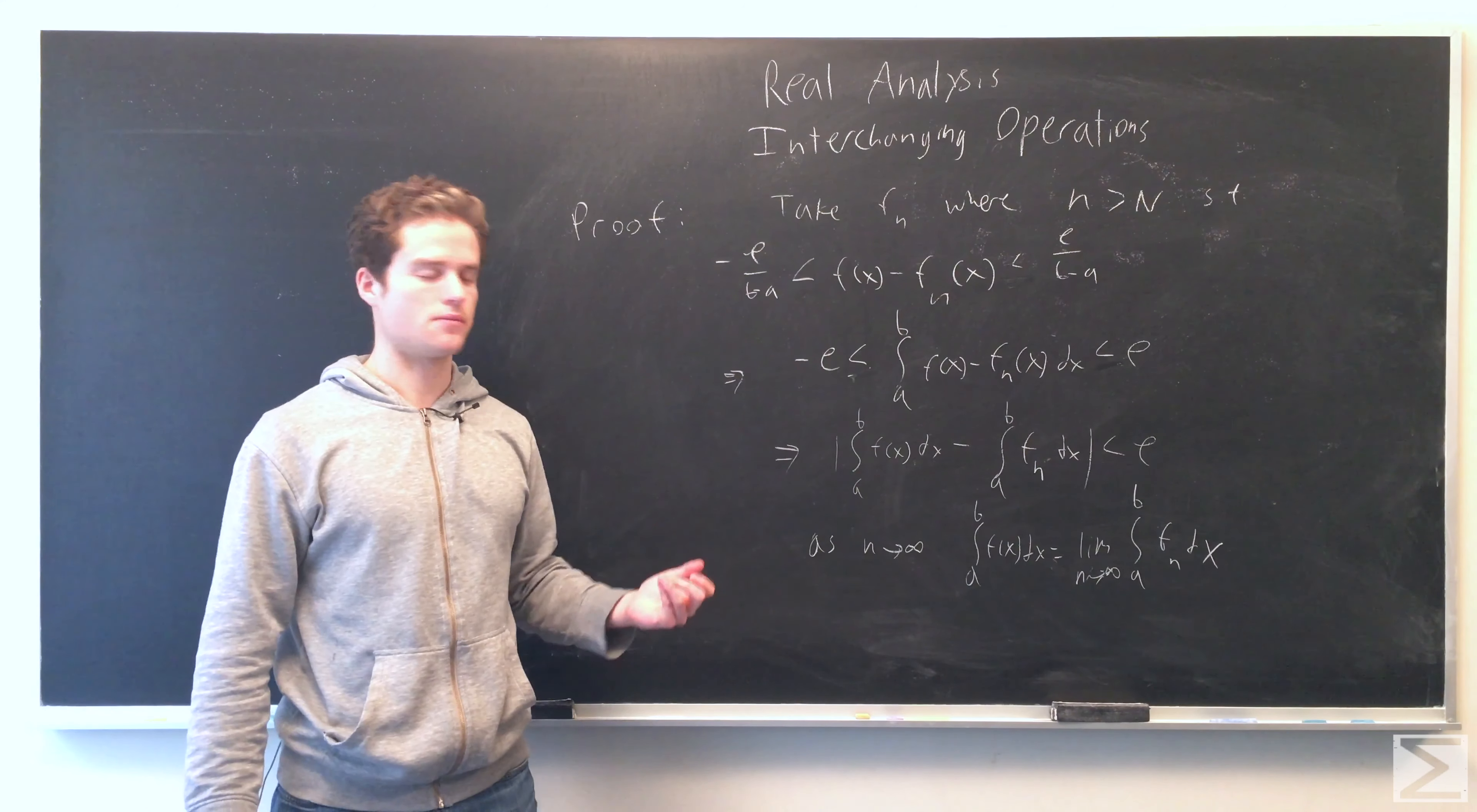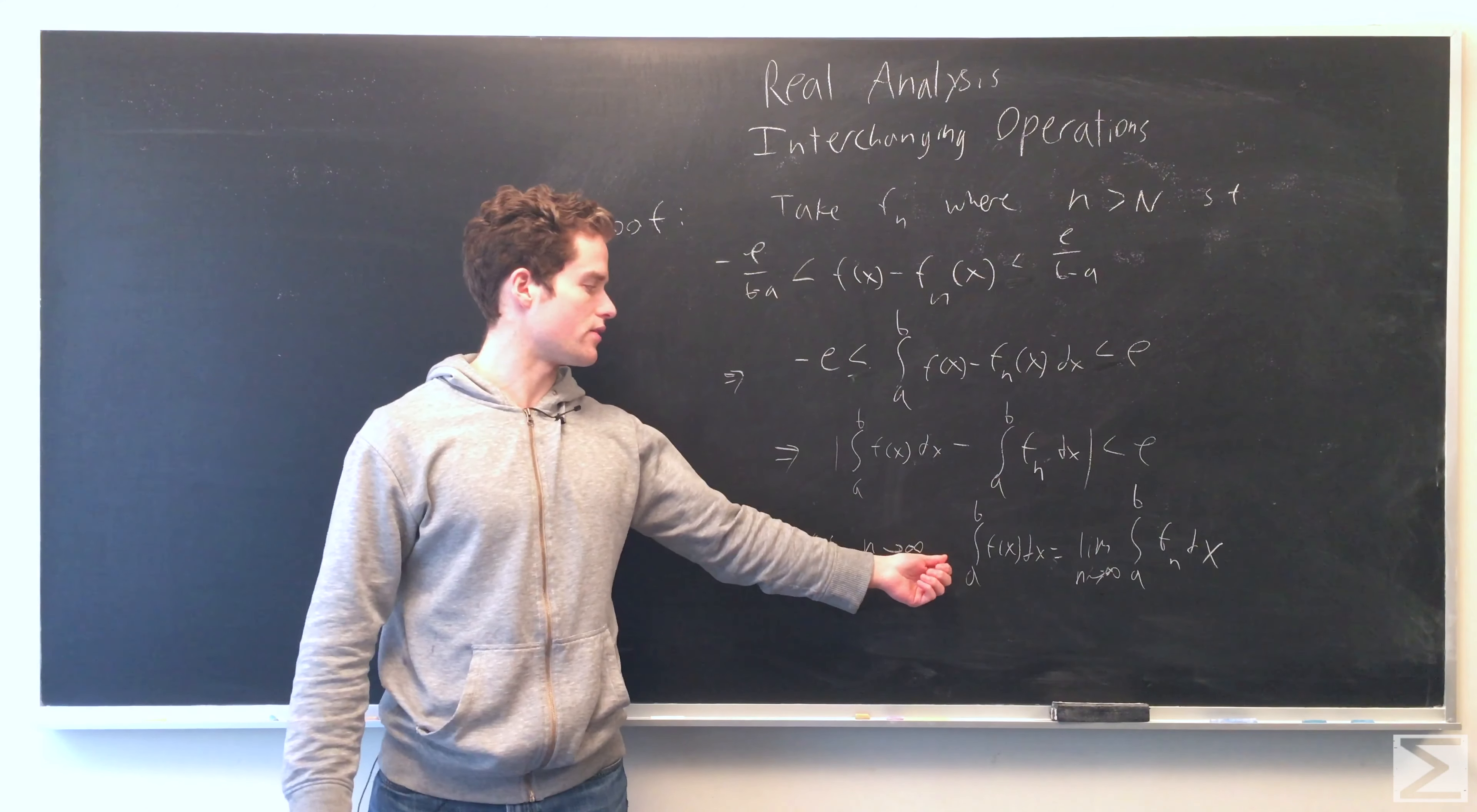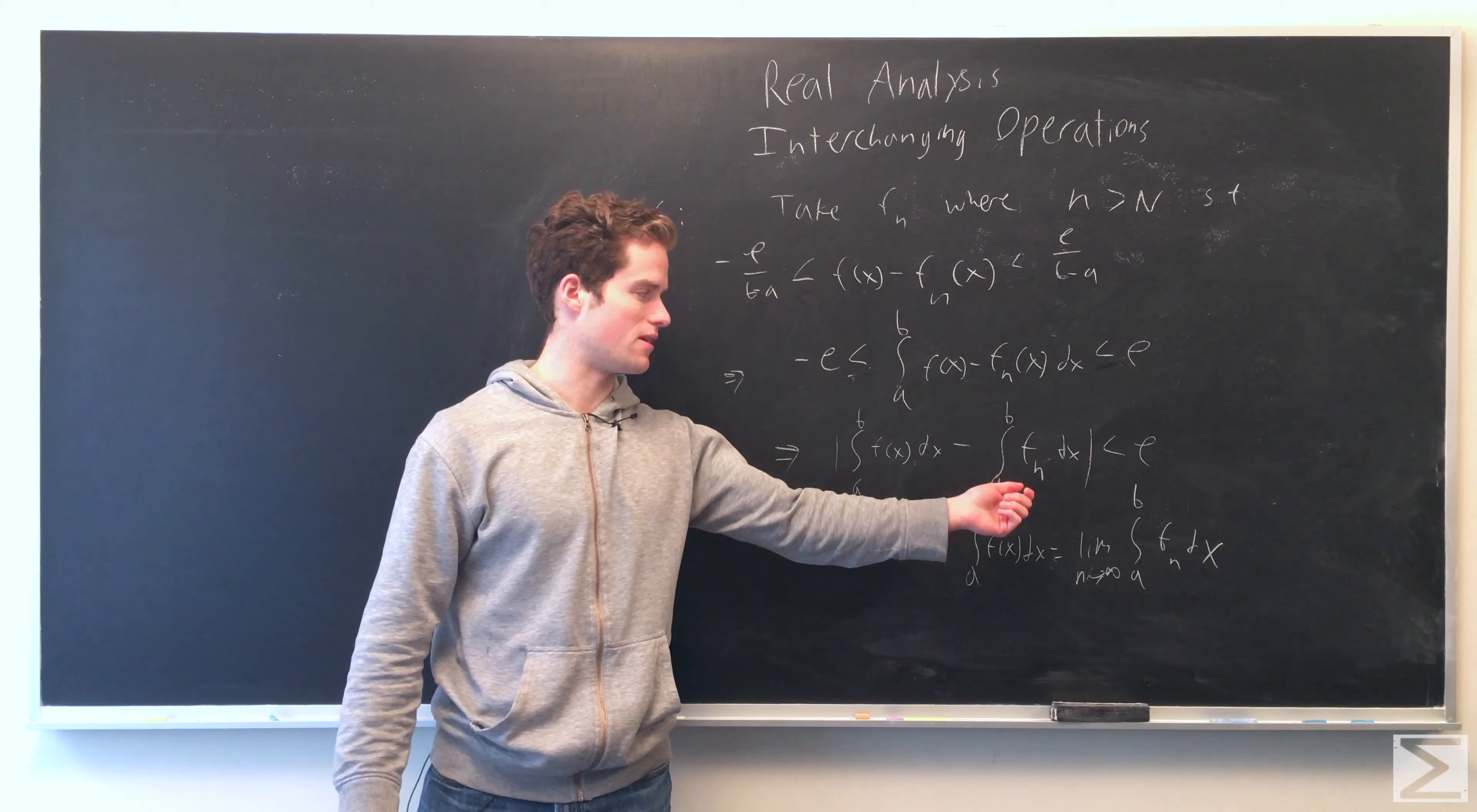But just taking the limit as n goes to infinity, we see the integral from a to b of f(x) dx will equal the limit as n goes to infinity of the integral from a to b of f_n dx.